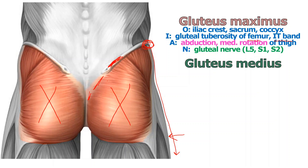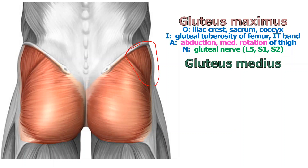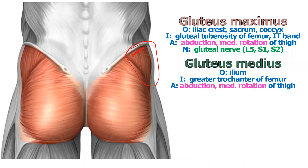Gluteus medius is right there, almost on the lateral part of the hip. It originates on the ilium, just a bit under the crest. Inserts on the greater trochanter of the femur — that very large lump of the femur. Same action as maximus: abduction and medial rotation of the thigh. Served by essentially the same nerve, but it is a little bit different — it's the superior branch, L4, L5, S1.